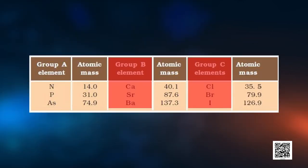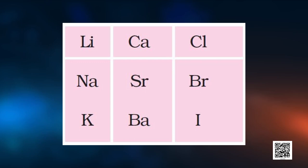Group B and Group C form Dobereiner's triads. However, Dobereiner could identify only three triads from the elements known at that time, so this system of classification into triads was not found to be very useful. Nevertheless, Dobereiner's attempts encouraged other chemists to correlate the properties of elements with their atomic masses.